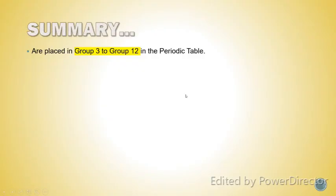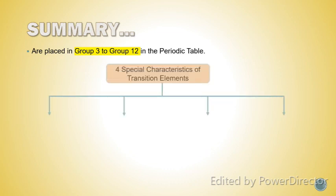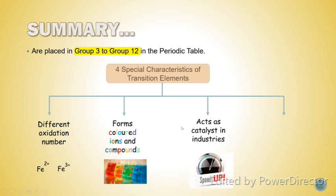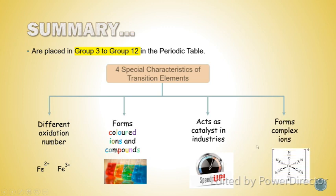In summary: transition elements are placed in Group 3 to Group 12 in the periodic table and have 4 special characteristics. They can form different oxidation numbers, they form colored ions and compounds, they can act as catalysts in industries, and they form complex ions. It is encouraged that you memorize 2 examples for each special characteristic. That's all for the lesson today — thank you for watching.